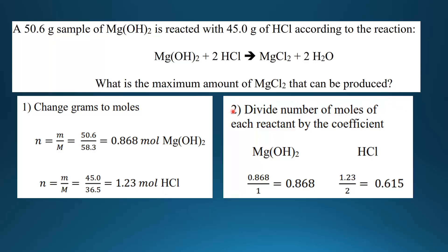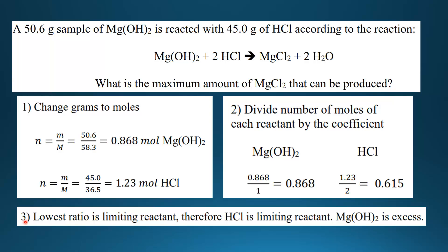The next step is to divide the number of moles of each reactant by its coefficient. The coefficient for magnesium hydroxide is 1 and for hydrochloric acid is 2. Dividing 0.868 by 1 gives 0.868, and dividing 1.23 by 2 gives 0.615. The lowest ratio is the limiting reactant — 0.615 is the lowest, so hydrochloric acid is the limiting reactant.